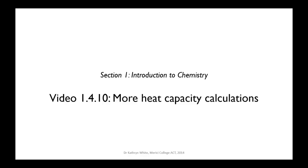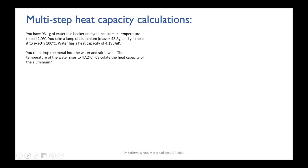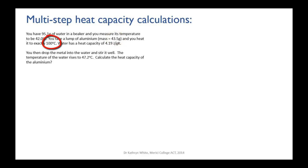In this video we will do a couple more heat capacity calculations, slightly longer and more complex ones. You've got 95.1 grams of water in a beaker measured at 42 degrees Celsius. You take a lump of aluminium, mass equals 43.5 grams, and heat it to exactly 100 degrees Celsius. You then drop the hot metal into the water, stir it well, and the temperature rises to 47.2 degrees Celsius.